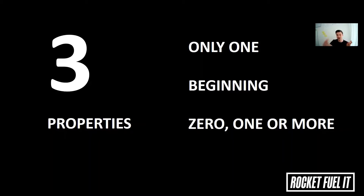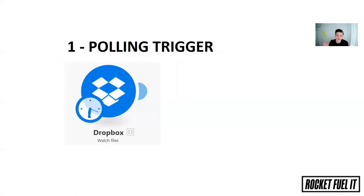The reason you can also have zero bundles is that with polling triggers, Integromat goes out, checks something, and comes back. If nothing happened, you get a zero result — nothing is going to trigger. So let's look at the triggers in detail. The polling trigger: you go out, watch something, and when something happens there, you come back and run the scenario.